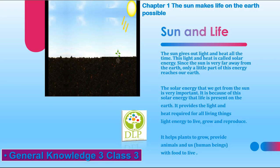Solar energy provides the light and heat required for all living things — light energy to live, grow, and reproduce. It helps plants to grow and provides animals and human beings with food to live.